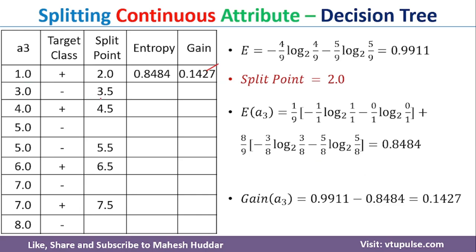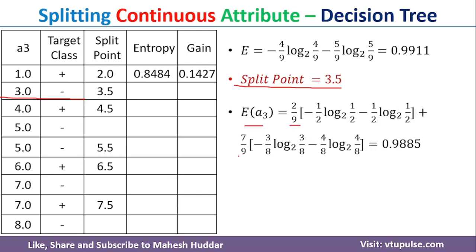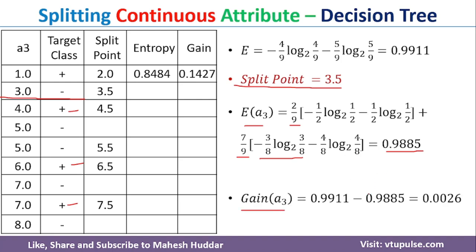Coming back to the next split point, 3.5: the entropy of the whole dataset remains the same. We only need to find the entropy at 3.5. Before 3.5 we get two examples; after 3.5 we have seven examples. So entropy of E3 = (2/9) times entropy of the two-example subset plus (7/9) times entropy of the seven-example subset. Out of the two examples before 3.5, 1 is positive and 1 is negative, giving entropy −(1/2)log₂(1/2) − (1/2)log₂(1/2). Out of seven examples after 3.5, 3 are positive and 4 are negative: −(3/7)log₂(3/7) − (4/7)log₂(4/7). The result is 0.9885, and the gain for this split point is 0.0026.